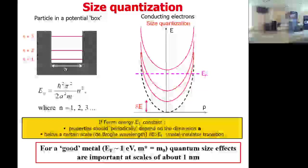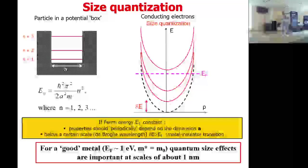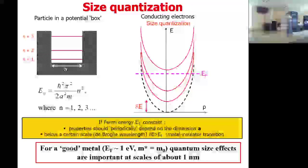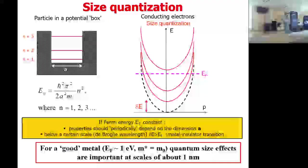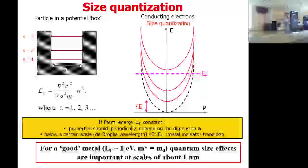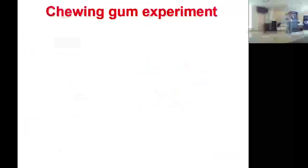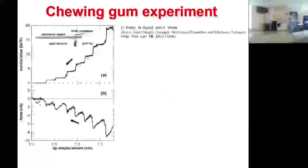Для типичных металлов — золота, меди — этот эффект должен наблюдаться на размерах порядка одного нанометра, что крайне сложно реализовать. Тем не менее, такие эксперименты проводились.